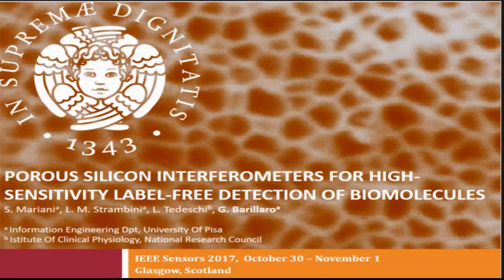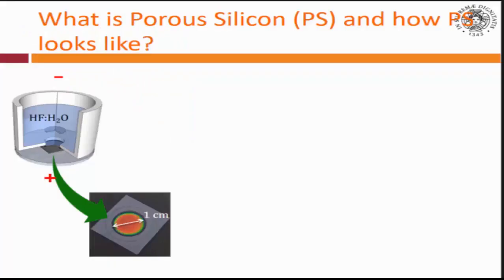Today I'm going to talk about improvement in limit detection using porous silicon interferometers. The improvement we are claiming is of three orders of magnitude. I'm not sure how many of you know about how this is made, but this is a very simple, interesting material, and the way to make it is very simple.